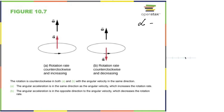This is a disk and the rotation rate counterclockwise is increasing — it's rotating faster and faster counterclockwise. Isn't alpha in the same direction as omega then? Yes. But what if it's still spinning counterclockwise but the rotation rate is decreasing — slowing down? The direction of omega is still up, but the direction of alpha is down.